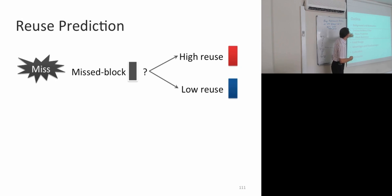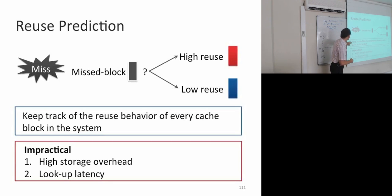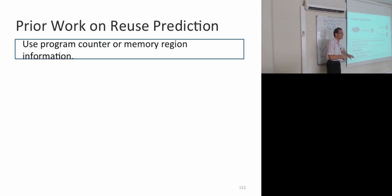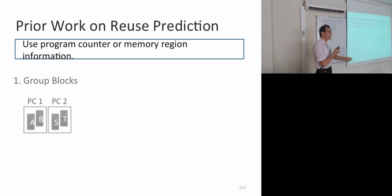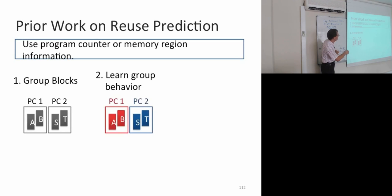The idea is the evicted address filter. We're going to do reuse prediction — whenever we get a cache miss, we classify the block as high reuse versus low reuse, dynamically. One option is to keep track of the reuse behavior of every possible cache block in memory, but people have seen this is impractical because of very high storage overhead and high lookup latency. Other prior works used program counter or memory region information. You can group blocks based on which program counter — which load — brought those blocks, and predict high or low reuse based on the load address.